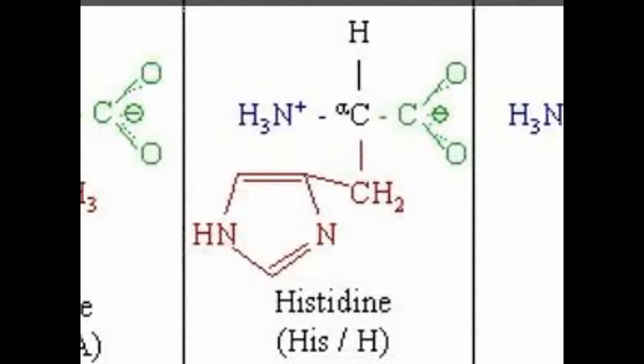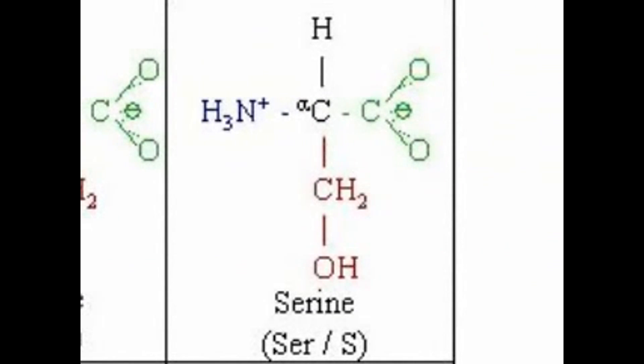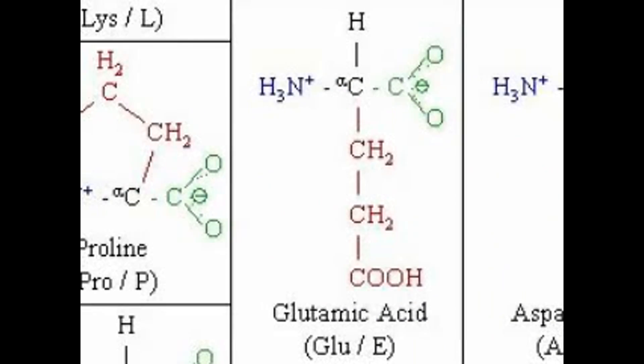When you eat a piece of chicken, that chicken is protein. During digestion, your body breaks apart those protein molecules back into all 20 little building blocks, and then reassembles them in the order it needs to build the proteins your body requires. It's pretty cool how we can turn what we eat into what our bodies need.